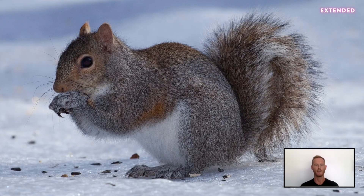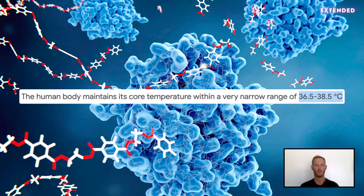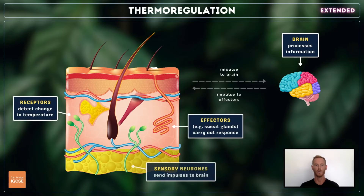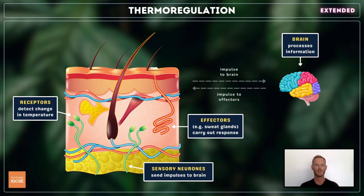Next, you need to know how mammals maintain a constant internal body temperature. This is essential for their survival, as enzymes that control the reactions in cells only function properly when temperature is kept within a narrow range. When internal body temperature deviates from the set point at around 37 degrees, thermoreceptors in the skin detect the change and send electrical impulses via sensory neurons to the brain. The brain processes the information and then sends impulses to effectors, for example the sweat glands, which carry out the appropriate response.